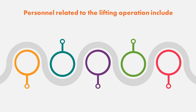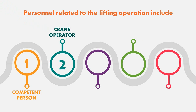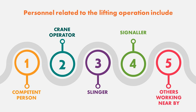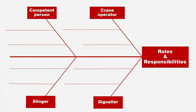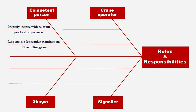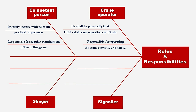Personnel related to the lifting operation include: competent person, crane operator, slinger, signaler, and others working nearby. The competent person shall be properly trained with relevant practical experience and is responsible for regular examination of lifting gears. The crane operator shall be physically fit and hold a valid crane operation certificate, and is responsible for operating the crane correctly and safely.